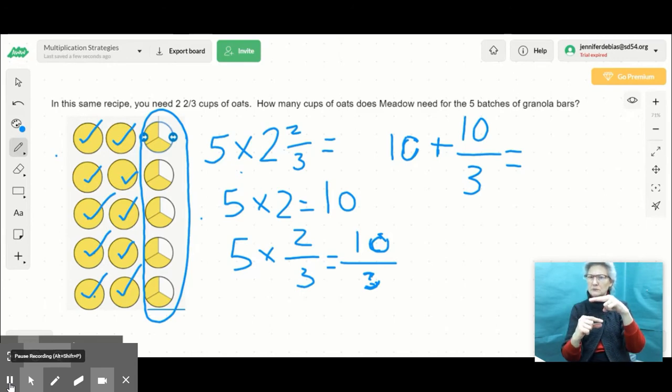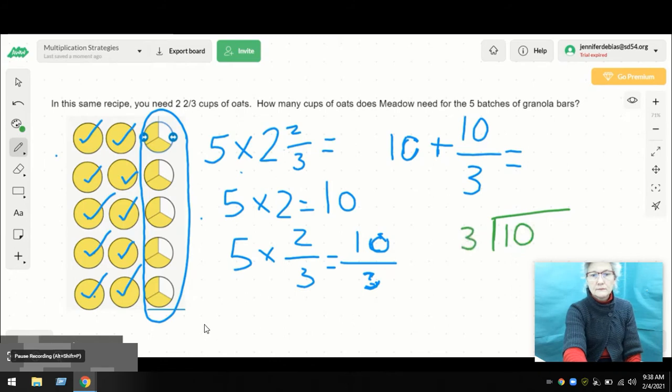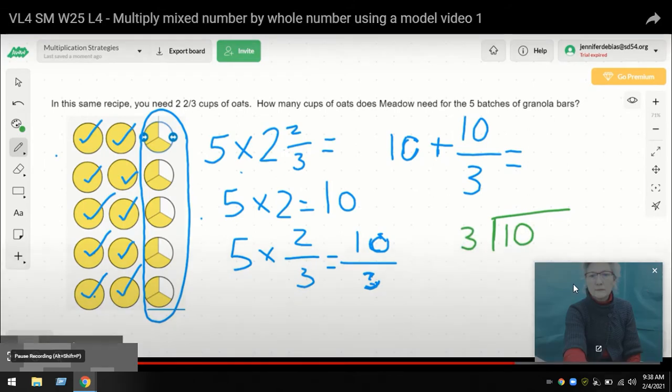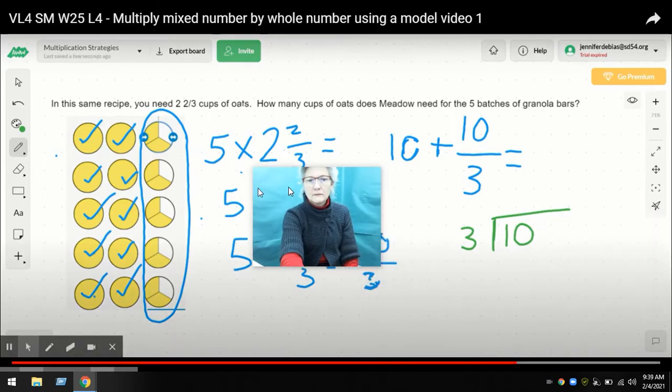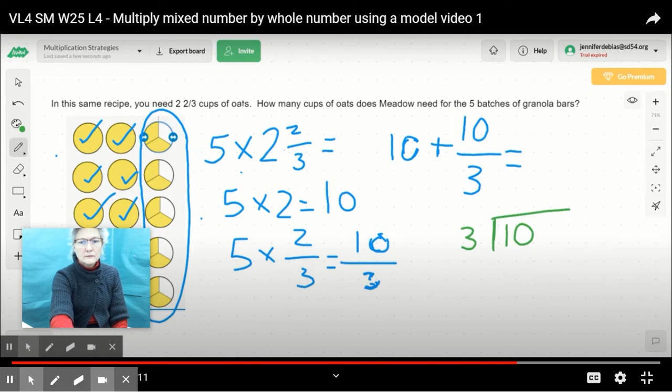Well, just like we did in our last lesson, I can figure that out. This time I'm actually going to use division. So I know that I can do 10 divided by 3, because there are 3 parts - 3/3 make one whole.